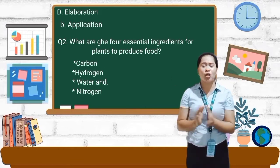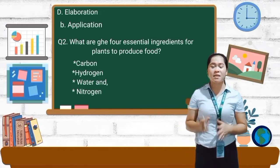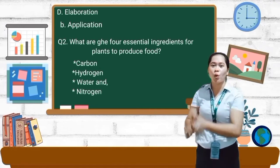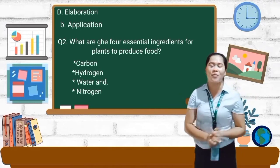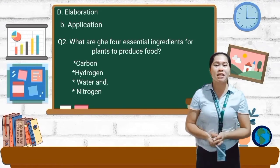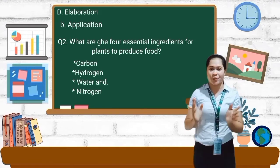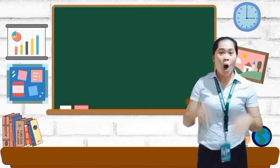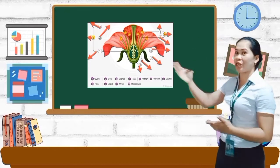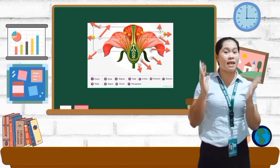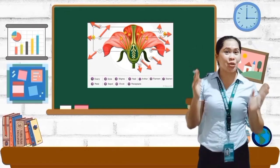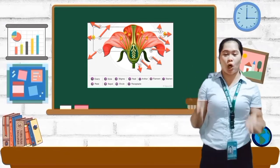Please give five claps to ourselves. Okay, very good class — all our answers are correct. Okay class, ma'am Joy will show you a picture and let us identify the parts of the flower and choose the correct answer below. So who wants to go first?